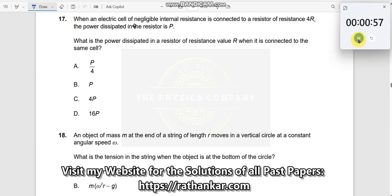Question number 17. When an electric cell of negligible internal resistance is connected to a resistor of 4R, the power is P. When you connect it to a resistance 4R, the power is P.